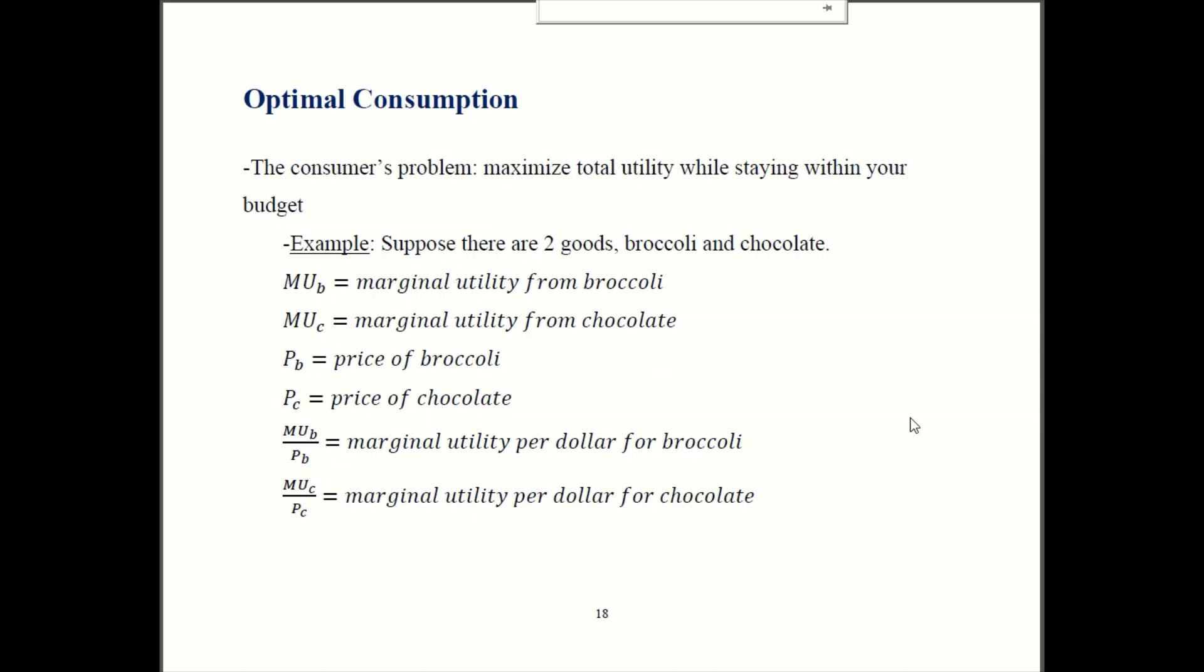All right, with all that in hand, we can now talk about optimal consumption. So that is making the best possible consumption choice within your budget constraint. So the best choice means you're trying to make yourself as happy as possible, the most possible satisfaction, the biggest total utility you can possibly get. So to keep things simple, we'll look at just two goods. The same principles, though, extend to three or more goods. So don't worry about this being oversimplified. Our two example goods will be broccoli and chocolate.